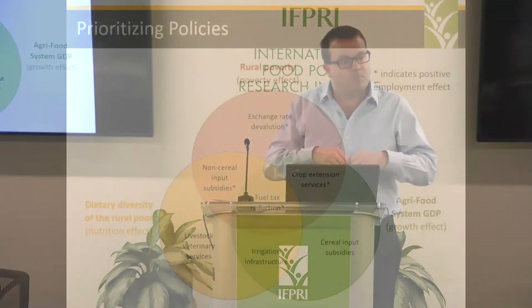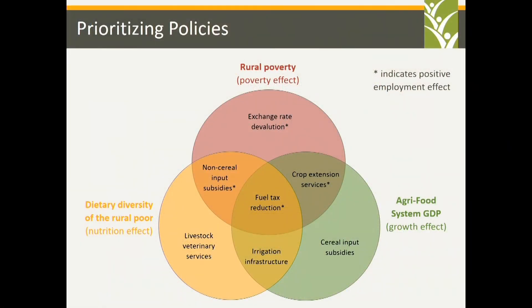We're now moving away from picking products to thinking about policies. Rather than thinking about maize, we're talking about input subsidy programs. Rather than thinking about where does irrigation sit — what are the returns to irrigation, where should that be ranked in investment plans — we can see that irrigation now sits around dietary diversity because of its links to vegetables and to rice, and is also linked to growth. Non-cereal input subsidies — seeds for vegetables and others — show up as linking both to poverty and to dietary diversity. This is another very promising avenue through ARENA and work with the agriculture group at Gates, literally linking the agriculture and nutrition groups.